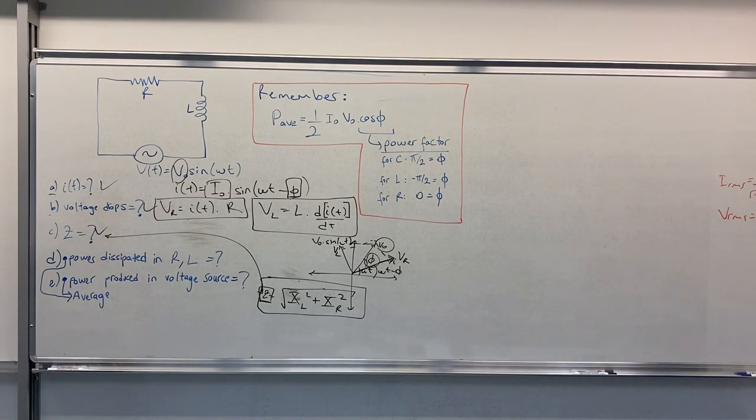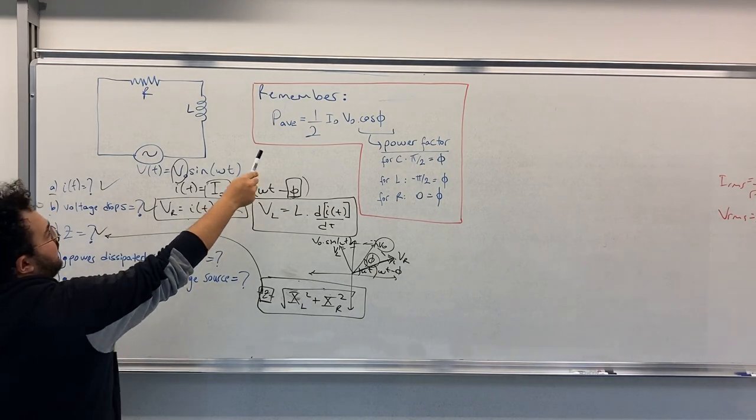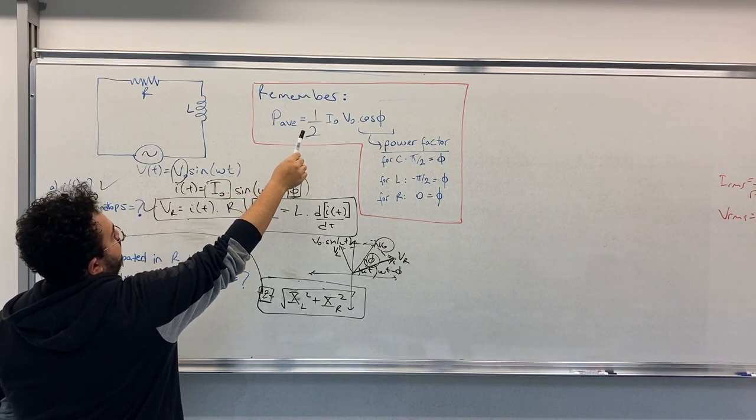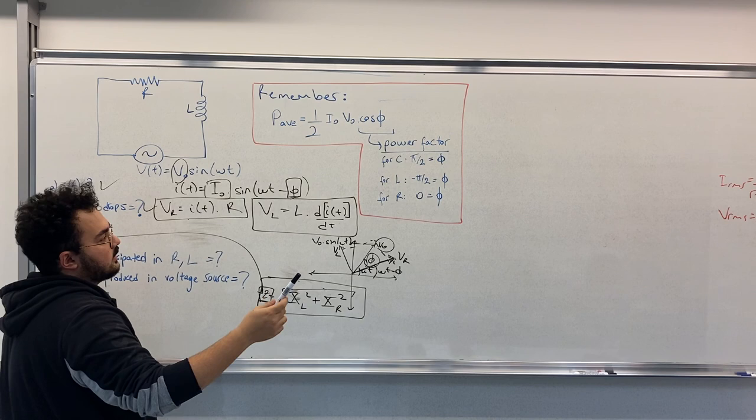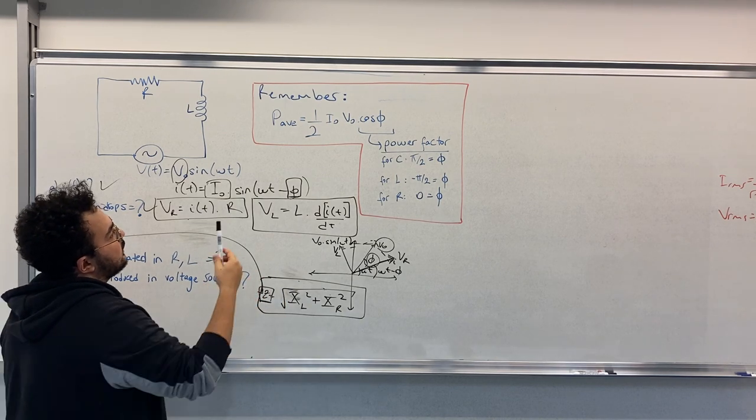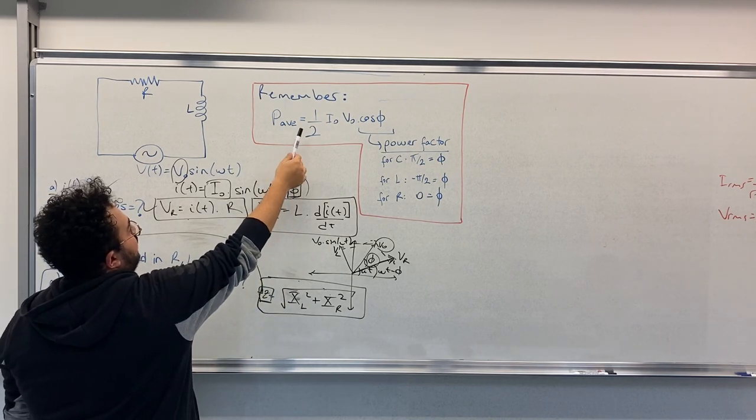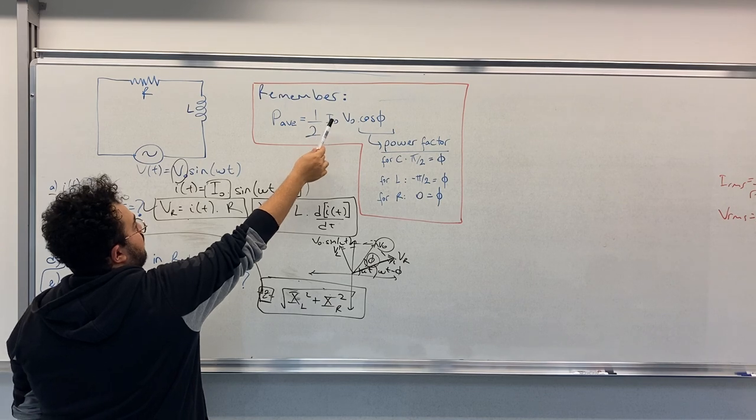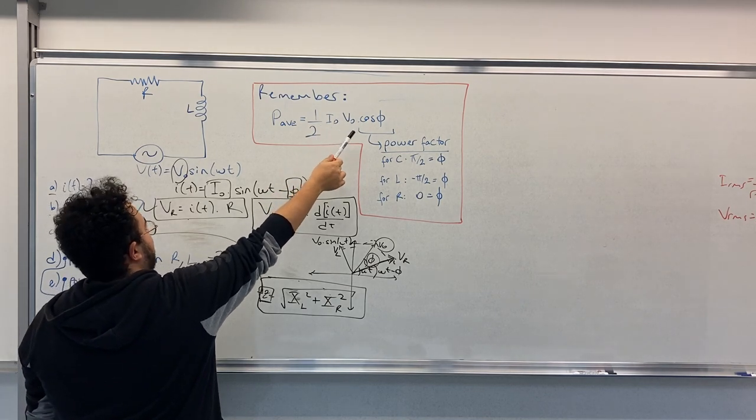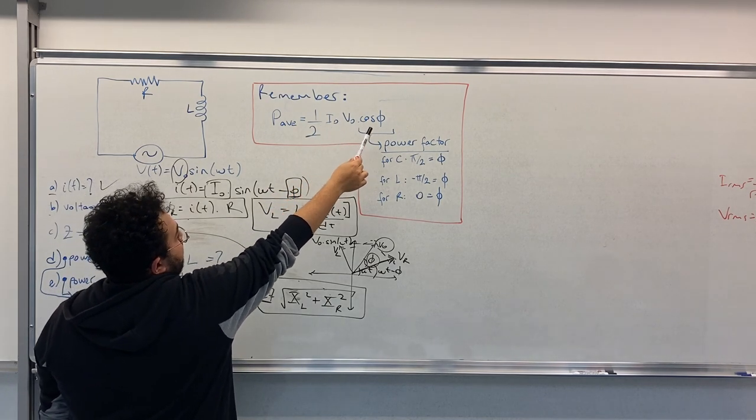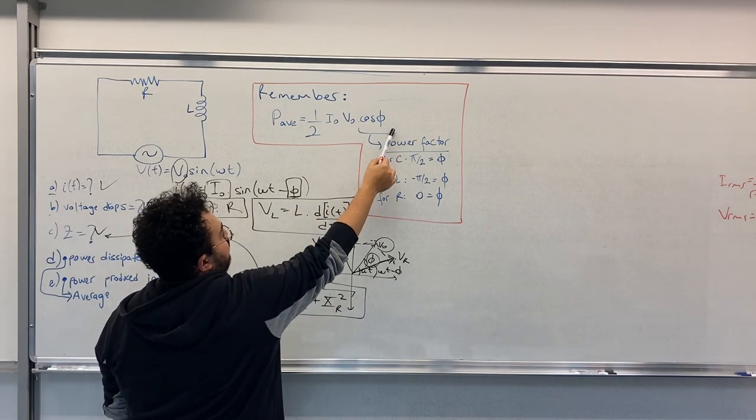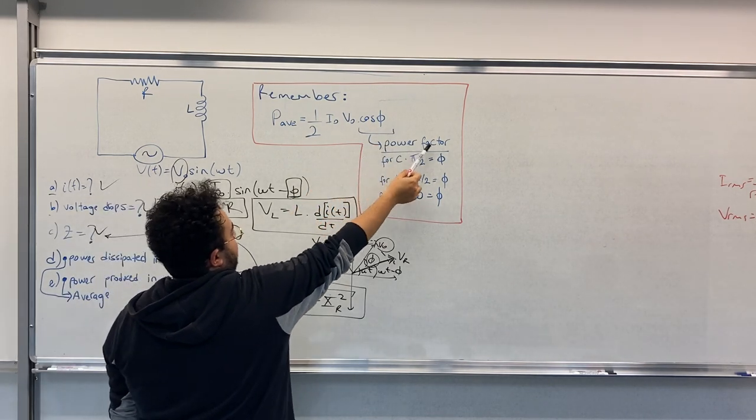For part D, we need to find average power dissipated in R and L. If you remember, P average equals to, this is the formula given in your books, P average equals 1/2 times I0 times V0 times cos(φ). Now, this cosine is the power factor.